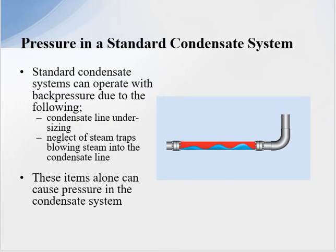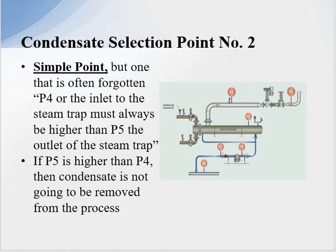Another factor we have to deal with in a standard condensate system is back pressure in the line. Unfortunately, all condensate lines operate with back pressure due to the following: undersized condensate lines where people aren't sizing the lines properly, and neglect of steam traps blowing steam into the condensate return line. That steam tries to expand sixteen hundred times and it's unable to, creating pressure in the return system. With those issues, there is a need in certain areas for condensate pumps. We have to look at it as a system.